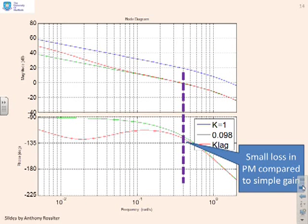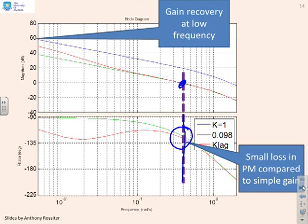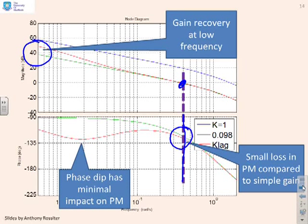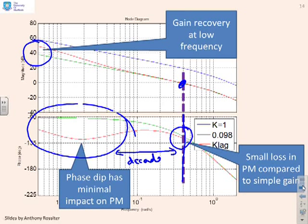Looking at the graphs for Example 2: the gain crossover frequency is the same for the lag compensator and the simple gain design — very close to the same. Again there's a small loss of phase margin; the red diagram is slightly below the green diagram, so the phase margin is probably about 5 degrees less. Again, there is significant gain recovery at low frequency — the red line is running well above the green line by a factor of beta=4. The classic phase dip is visible, but it's been kept at least a decade below the gain crossover frequency, so it doesn't have a significant impact.